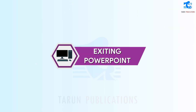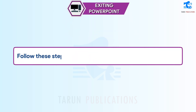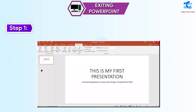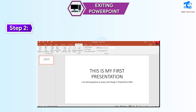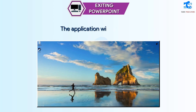Exiting PowerPoint. Follow these steps to exit from PowerPoint 2016. Step 1: Move the mouse pointer towards the Close button. Step 2: Click on the Close button. The application will be closed.